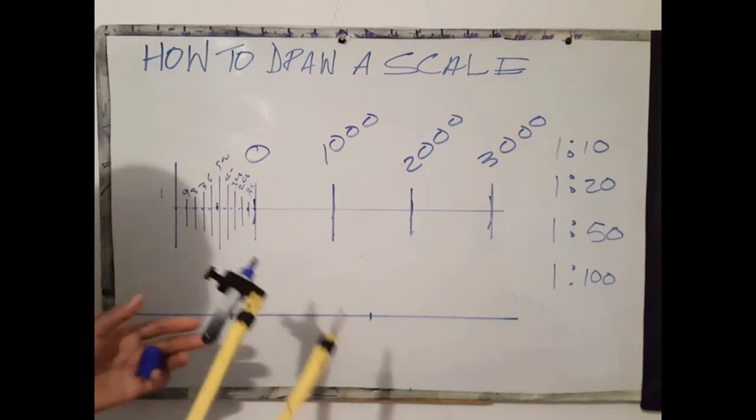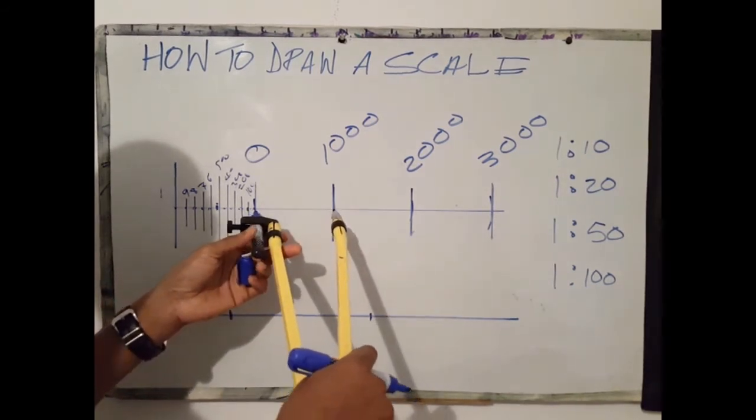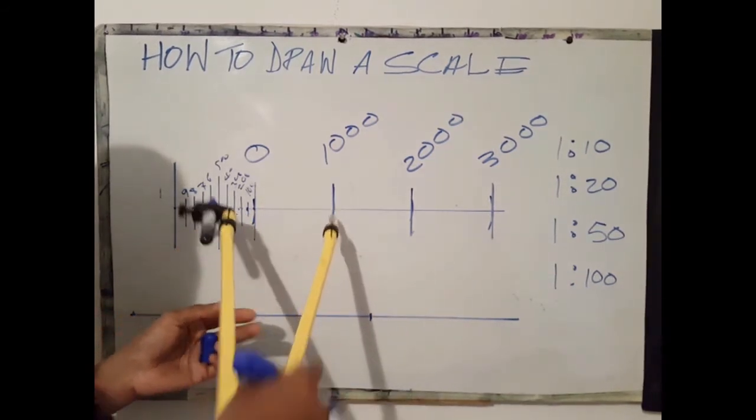Say we want 1500. We would go to 1 and down to 5. That's 1500.